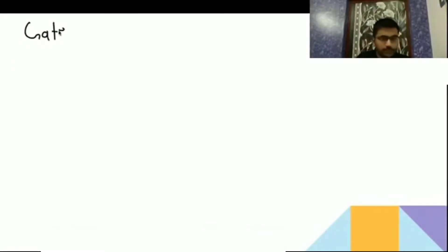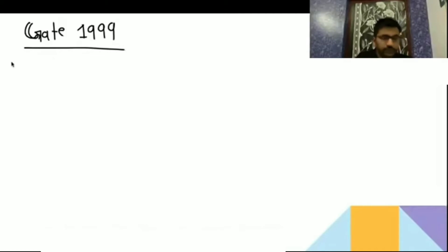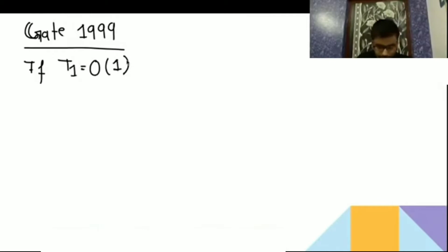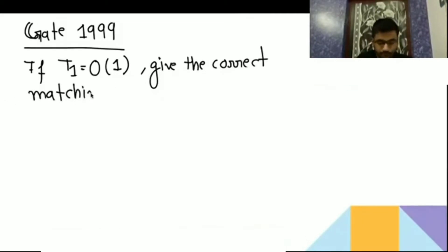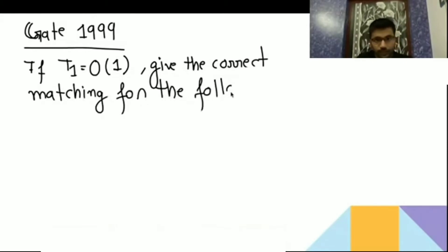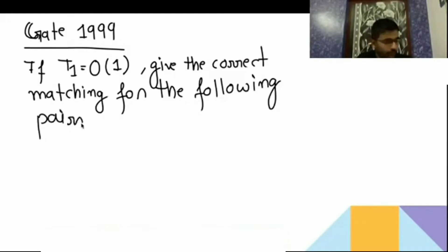Next is your GATE question. It is saying that T(1) is equal to O(1). You have to give the correct matching for the following pairs.